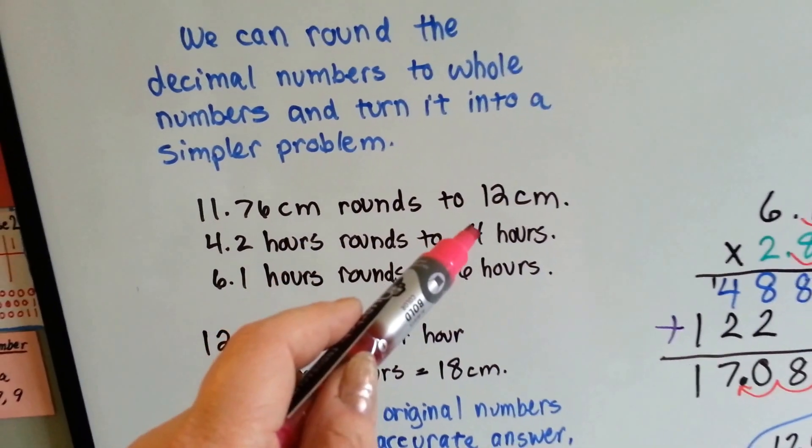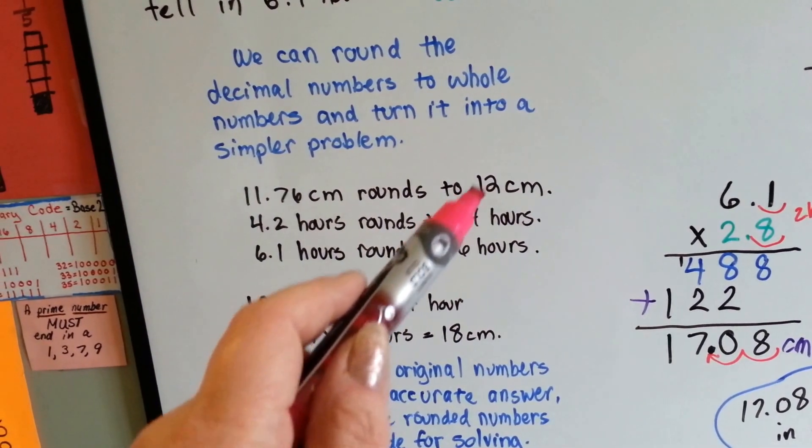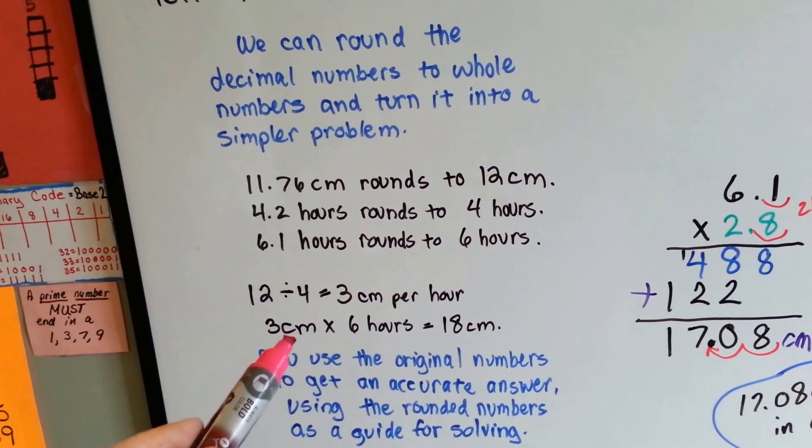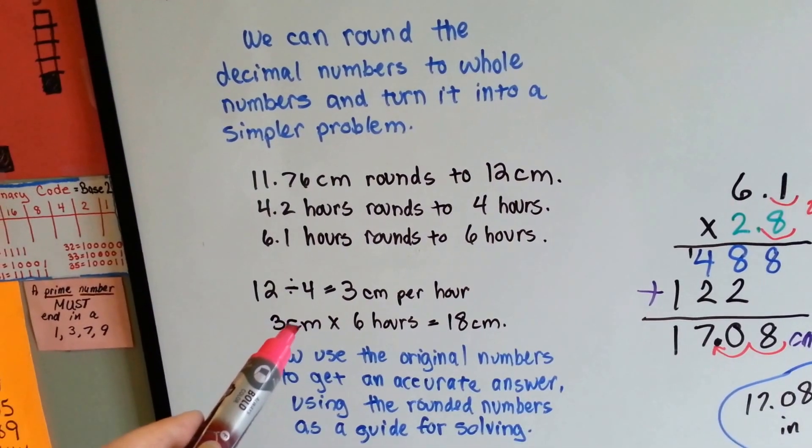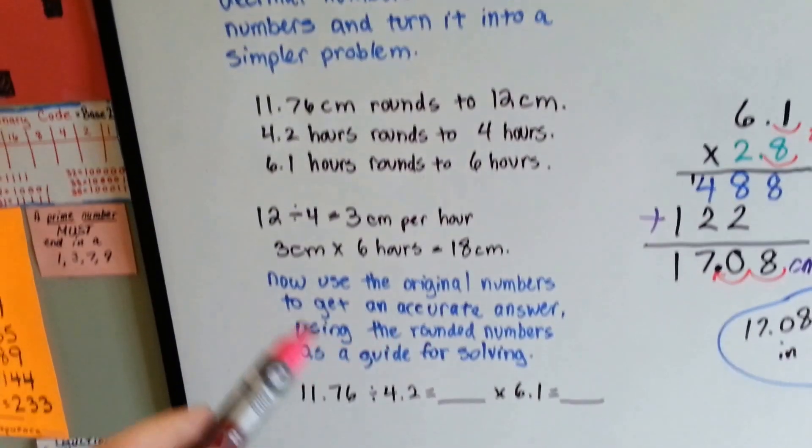If it rained 12 cm in 4 hours, how many centimeters did it rain per hour? That's very easy. 12 divided by 4 is 3. It's 3 cm. So, if it rained 3 cm per hour, how much did it rain in 6 hours? That's easy. It's 18.